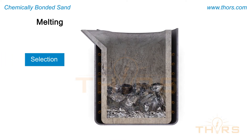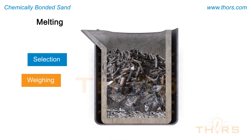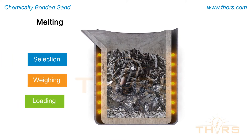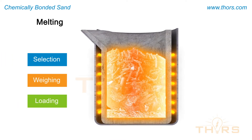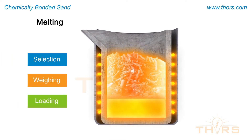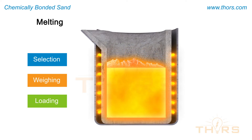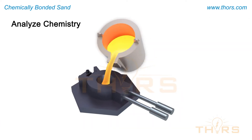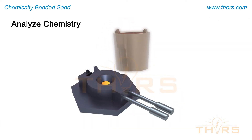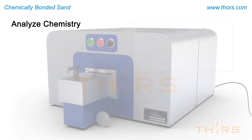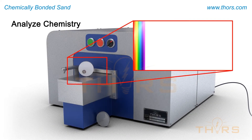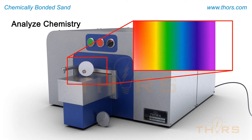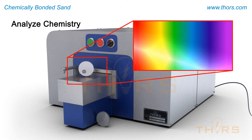Melting includes the selection, the weighing, and the loading of different charge materials into a melting furnace. Once the charge is melted, the melt chemistry is analyzed and corrected if needed, prior to tapping the metal into pouring ladles.